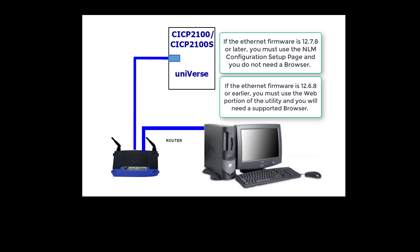First, a DHCP-enabled router is recommended to provide an IP address to the CICP-2100 and the CICP-2100S controller network adapters, which default to DHCP mode. Next, a computer with the Universe Finder utility is required, and also a supported web browser if the Ethernet firmware is 12.6.8 or earlier. The supported web browsers are Chrome and Internet Explorer, but Chrome is recommended.